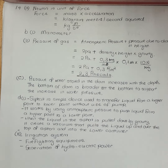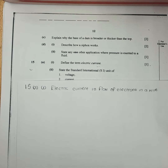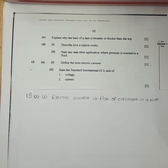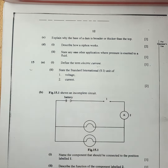This was the complete solution of number 14. Moving on to number 15: part a, define electric current. Electric current is defined as the flow of electrons in a wire, or alternatively as charge over time. Part two: state the SI units of voltage and current. The SI unit of voltage is volts and the SI unit of current is amperes.